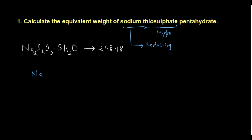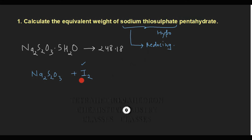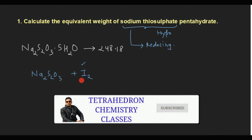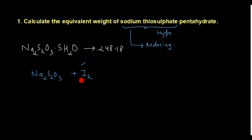I will write the reaction for Na₂S₂O₃ — I am not including water molecules as they do not participate in this reaction. In this reaction, iodine is involved. You may directly make an iodine solution, or you can liberate iodine from a salt. For example, in the experiment to determine the percentage of available chlorine in bleaching powder, iodine (I₂) is liberated from potassium iodide and then titrated against the hypo solution, i.e., sodium thiosulphate solution.